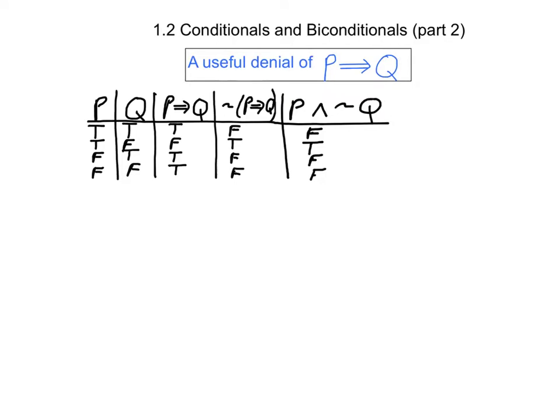The only way that p and not q can be true, since it's an and statement, is when both parts are true — and that happens precisely when p is true and q is false. So that means the proposition p and not q is equivalent to the negation of p implies q.